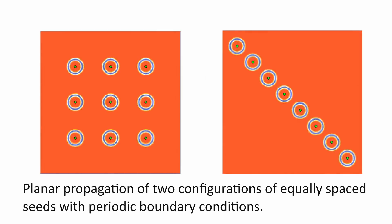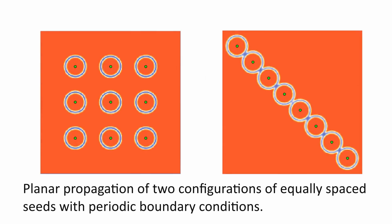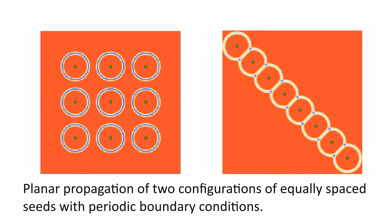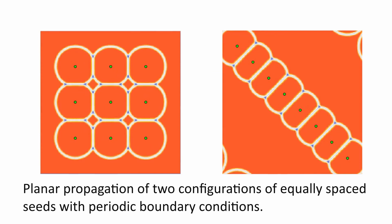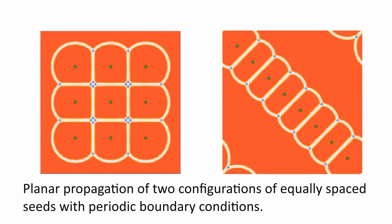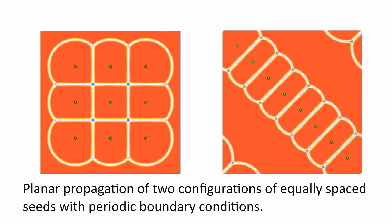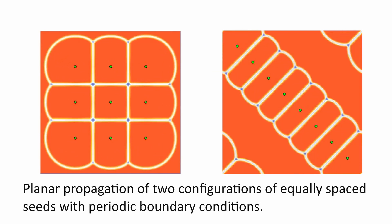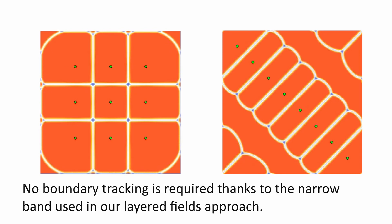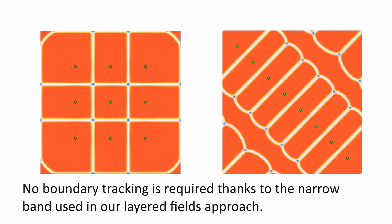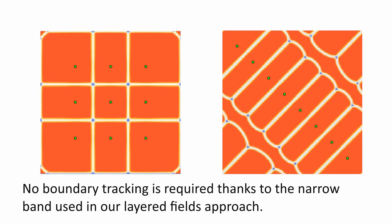The evolution of two different seed distributions in the plane shows that our method reproduces expected behavior without using classical partitioning methods such as Voronoi diagrams.